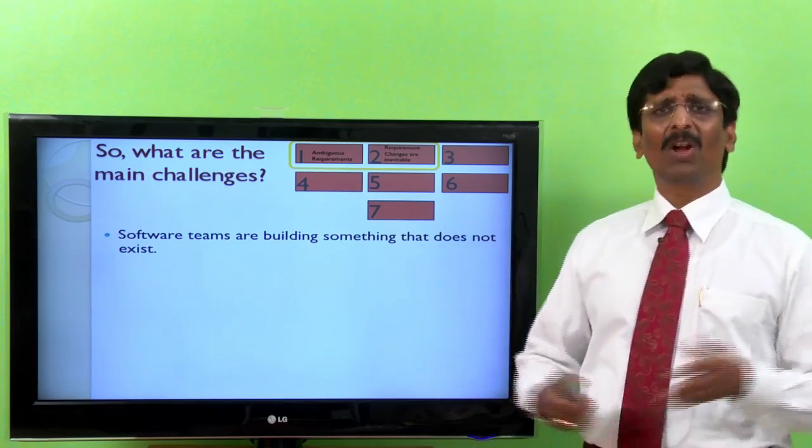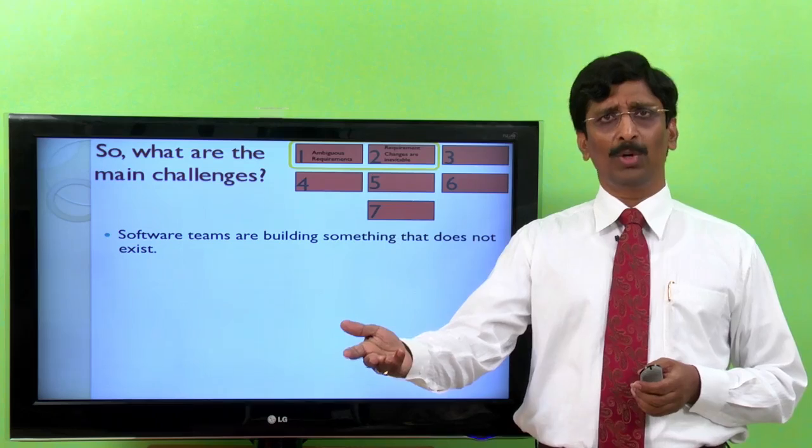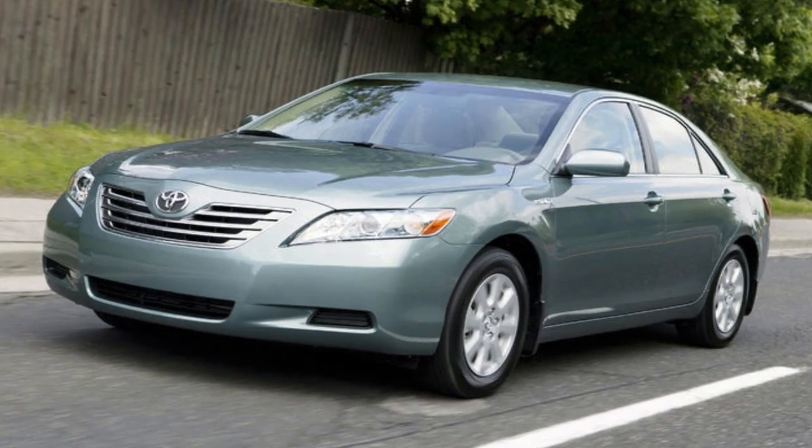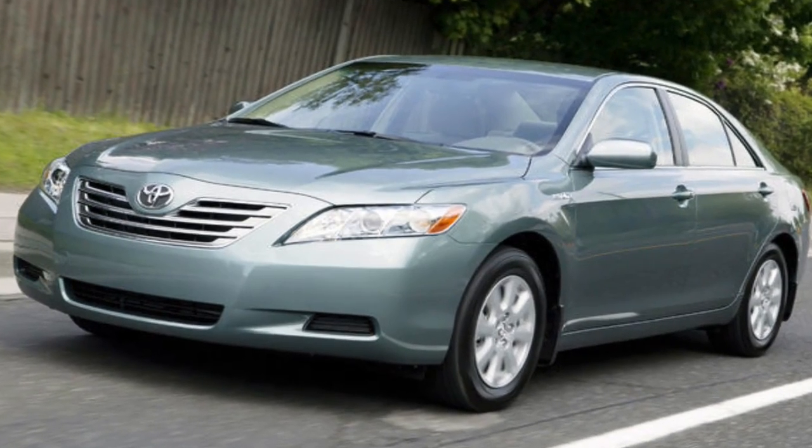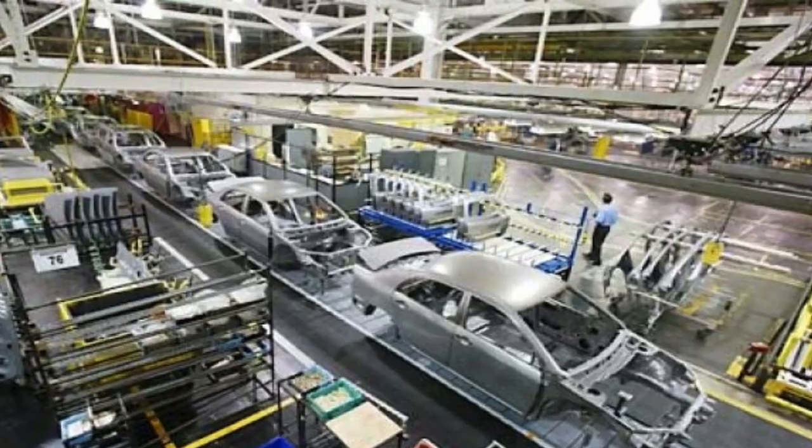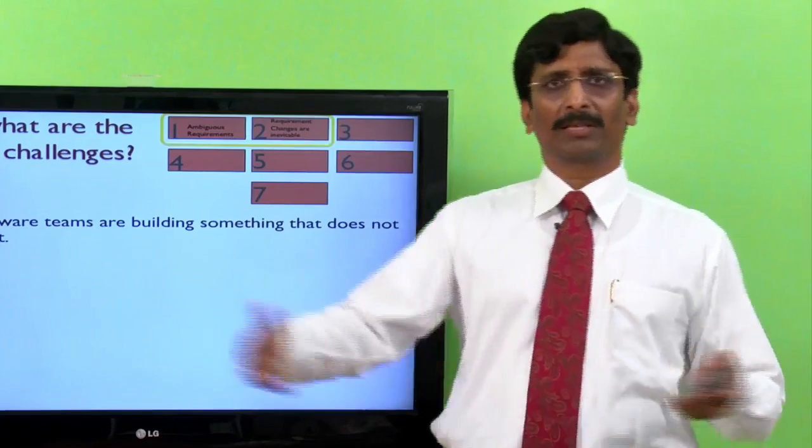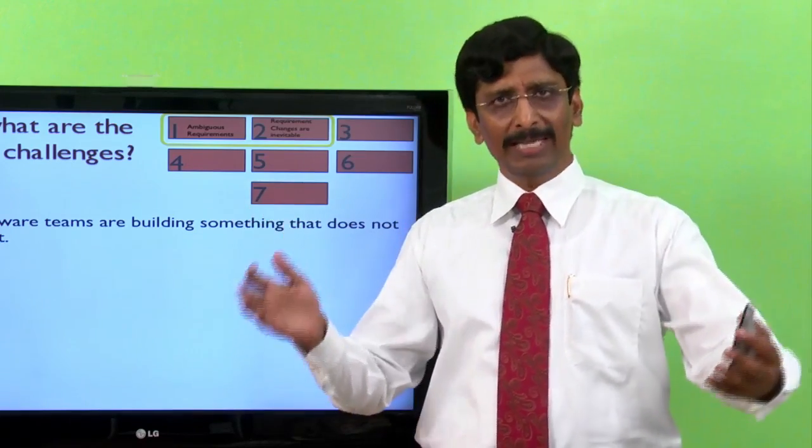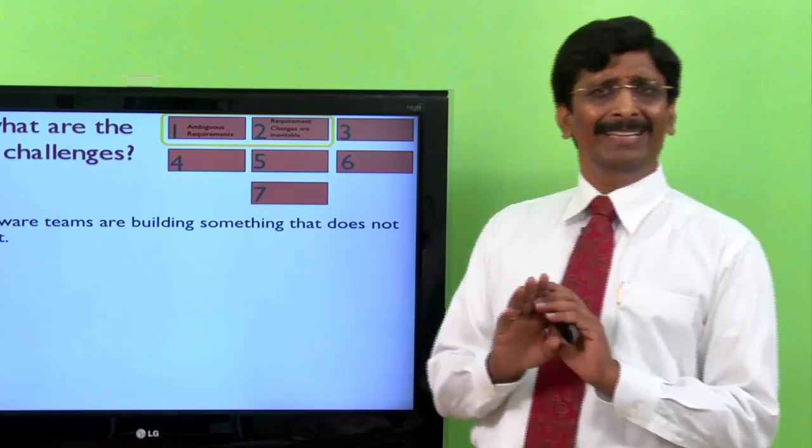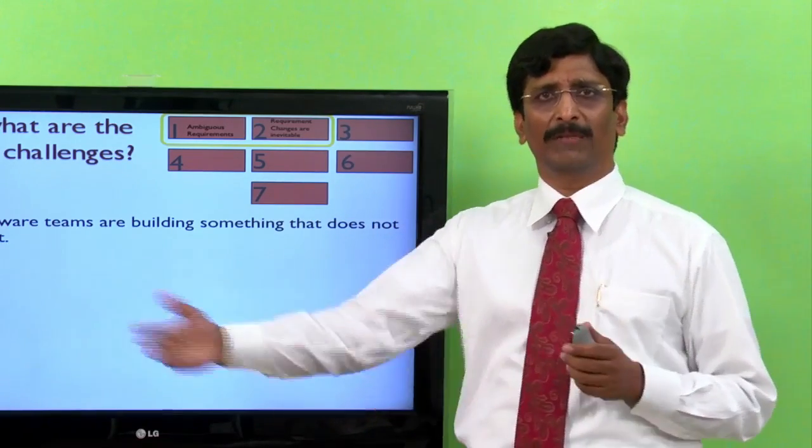See, software development is not like automobile production. Say for example, automobile company producing a car, say Toyota manufacturing Camry. And in the assembly line, say about 100 Toyota Camrys are to be manufactured today. The development team clearly knows what needs to be manufactured on that day. What should be the size of chassis? What should be the size of the car? What should be the engine? What should be the steering? Everything is very clear. And they have to mechanically do things as per the instruction given to them.